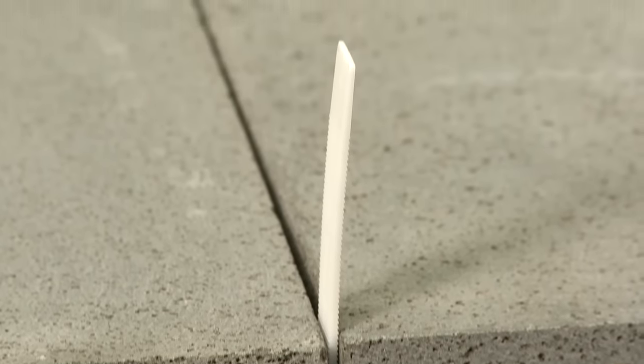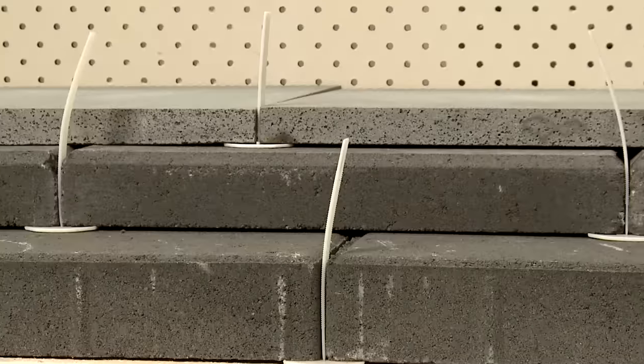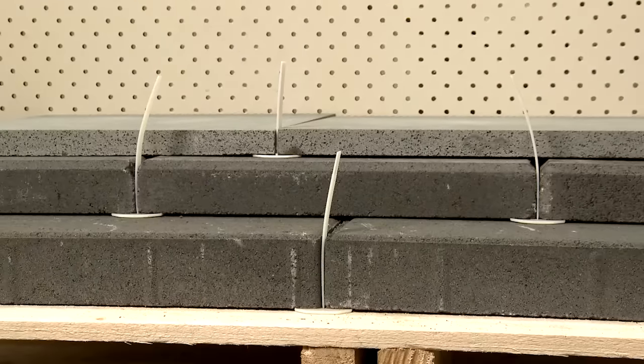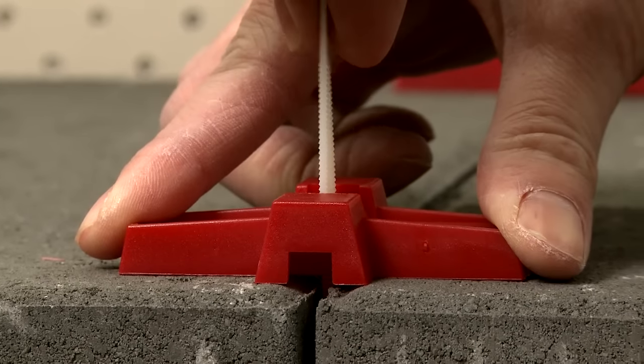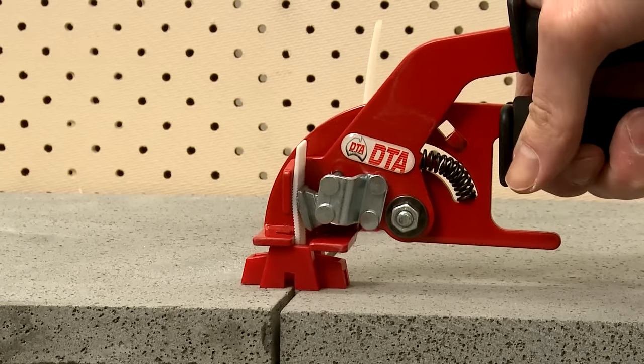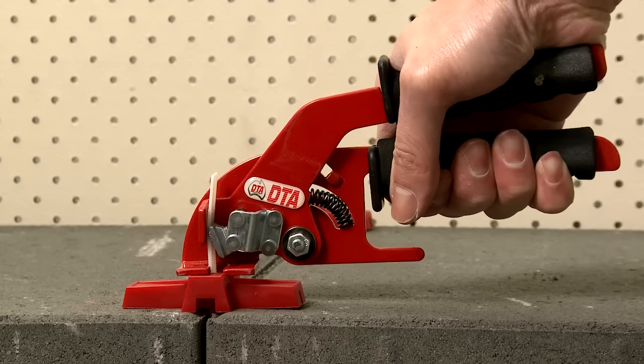The DTA Lippage Leveling System can be used for tiles and pavers up to a height of 70mm. Make sure you choose the correct spacers for the height of the tile. The technique for using the system is the same regardless of the tiles that you use.